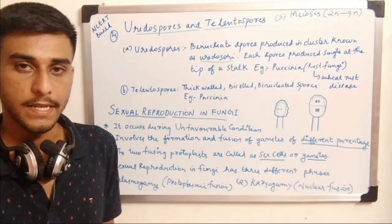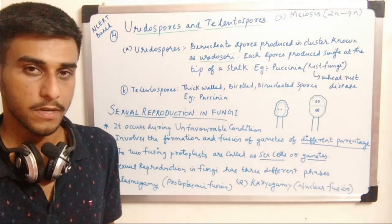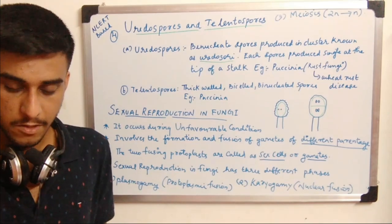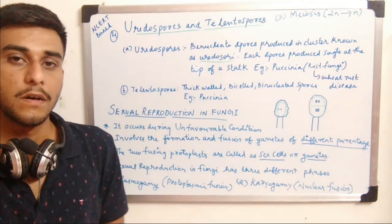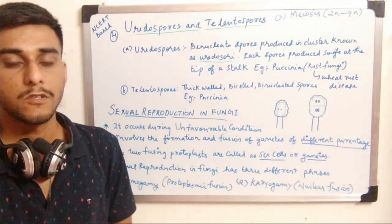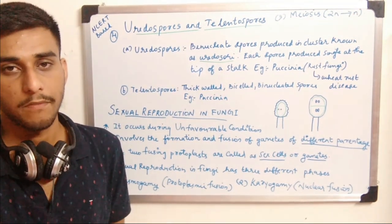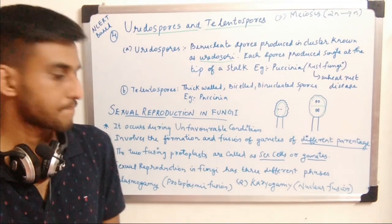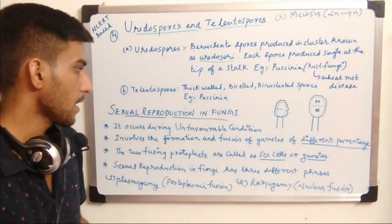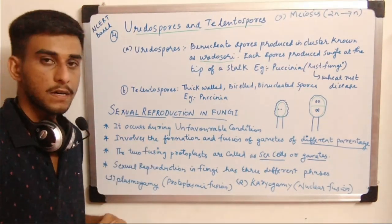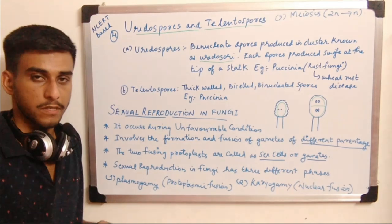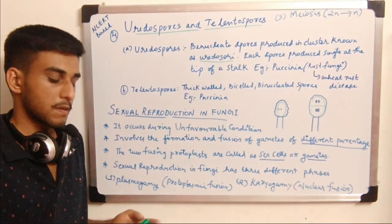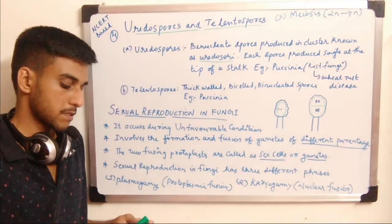A good example of a fungus that produces teleutospores is Puccinia, the wheat rust fungi. This is the end of asexual reproduction. Now we will be discussing sexual reproduction in fungi.